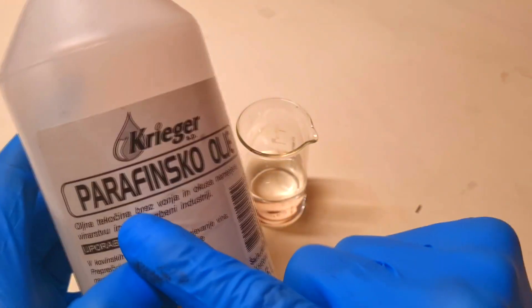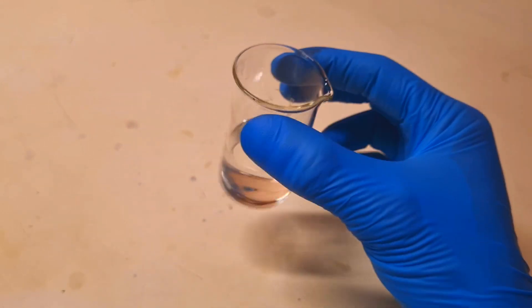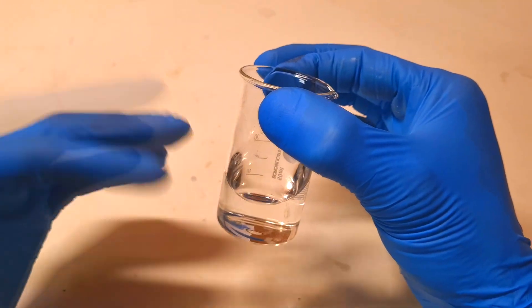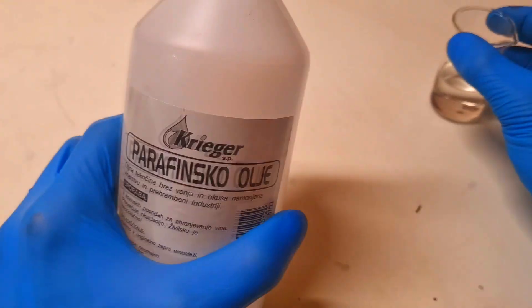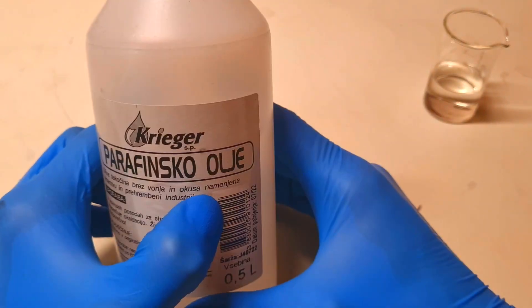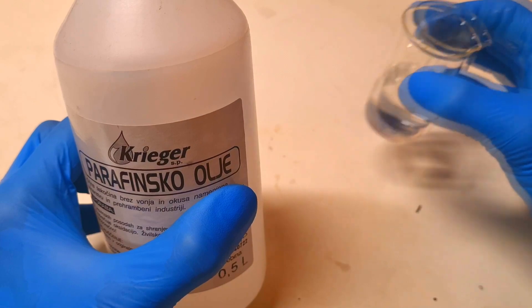Here I use this paraffin oil, and here I have some ordinary water. The water will be, let's say, the negative side of the battery. And the oil will be the positive or the cathode side of the battery.